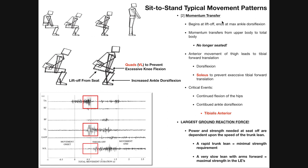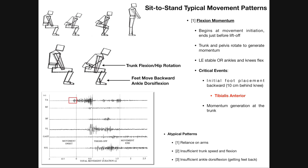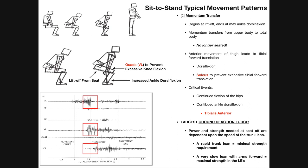Now we move into the momentum transfer phase, which begins at lift-off — when your buttocks and thigh are no longer in contact with the seat — and ends at maximum ankle dorsiflexion. In this phase, we use the momentum generated by the trunk flexion in the previous phase and distribute it to the total body, particularly the lower extremity. During flexion momentum, the buttocks and thigh were anchored on the seat, so the momentum was all upper body. Now it transfers throughout the whole body, including the lower extremities.